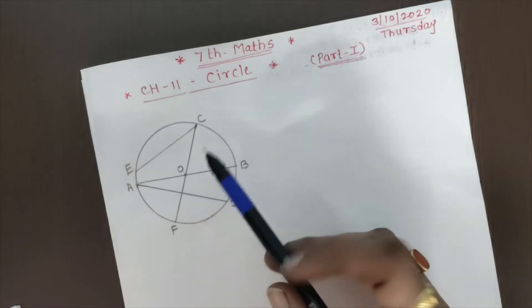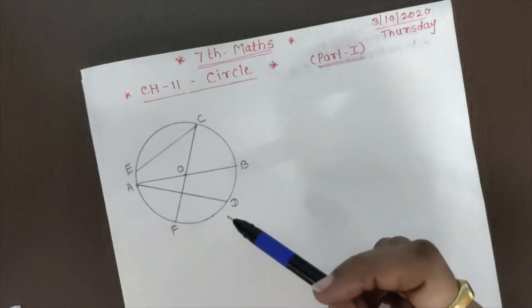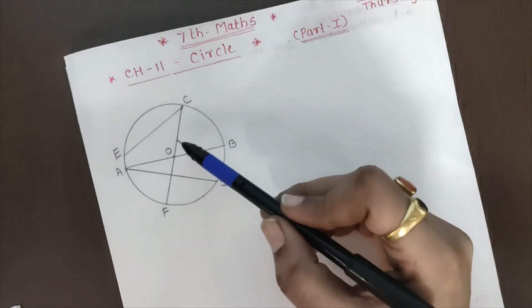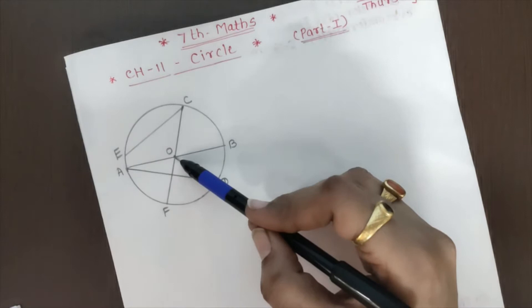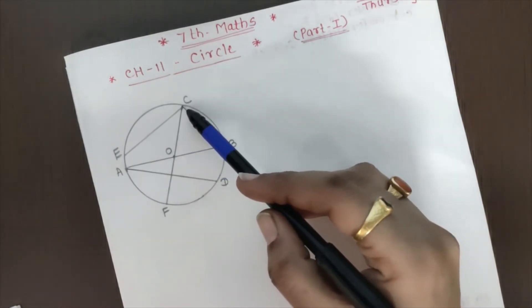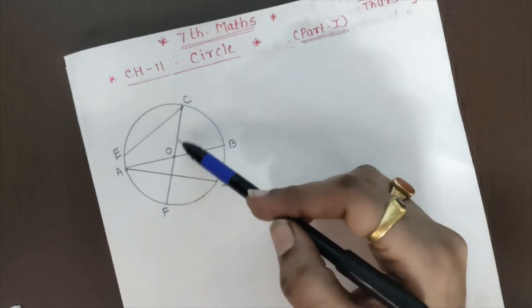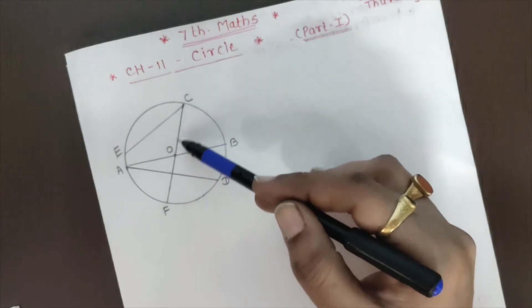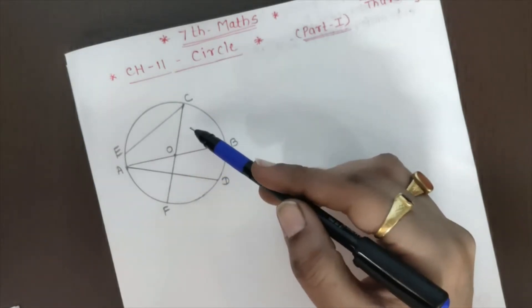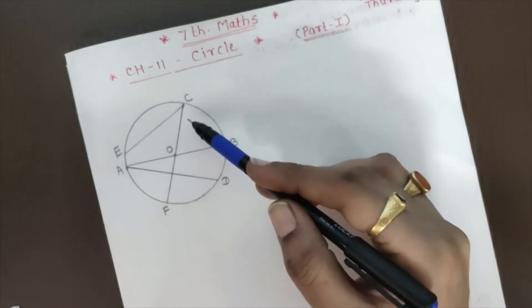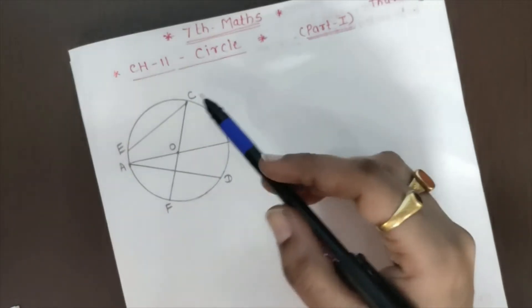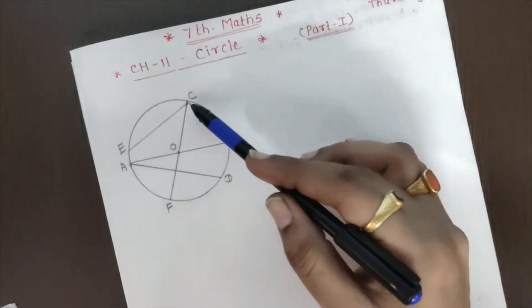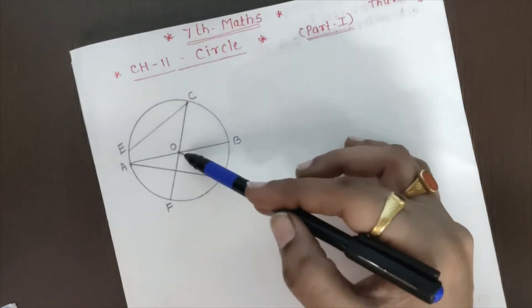Then what about radius? What is the definition of radius then? So radius means the distance from the center of the circle to the circumference. The segment which joined center of the circle and any one point on the circumference, that distance is called as radius.